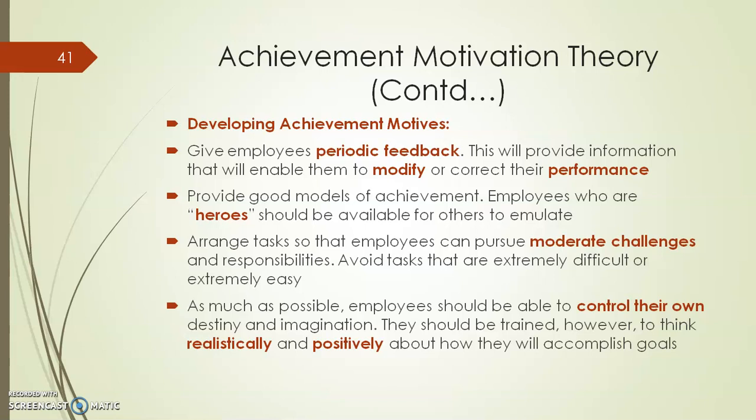This theory suggests that for employees who are motivated by achievement, you should give them tasks with moderate challenge and moderate responsibility. If you give extremely difficult tasks, they will feel that 'we cannot achieve this' and will feel demotivated even before starting. On the other hand, if tasks are too easy, they will feel complacent and bored — they won't get the kick that achievement gives them. So it is always best to give tasks of moderate difficulty so they can work harder and achieve their goals.